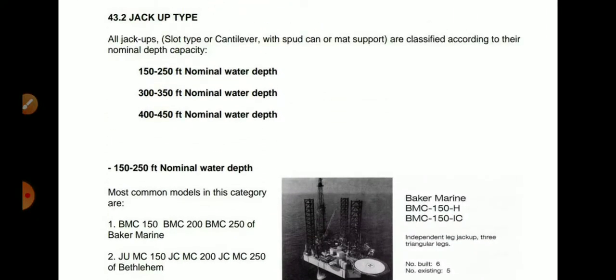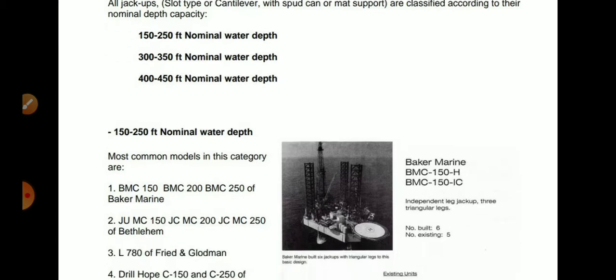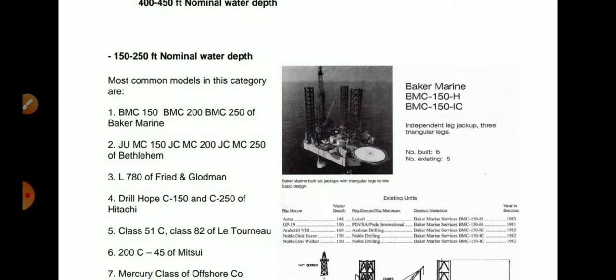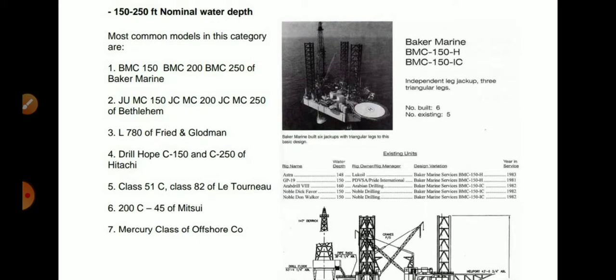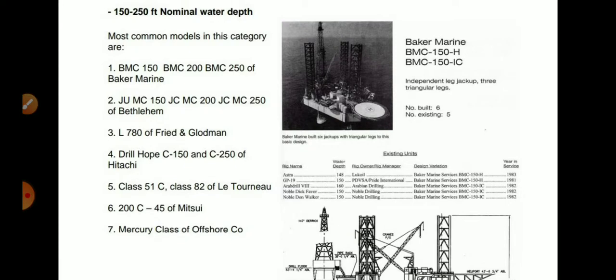Now the different types of jackup rigs: jackups are classified as slot type or cantilever, with spud can or mat supported, and also classified according to nominal water depth capacity. For 150 to 250 feet nominal water depth, there is one category of rig. Common models in this category include BMC 150 and BMC 200. For 300 to 350 feet nominal water depth there is another category. For 400 to 450 feet nominal water depth there is yet another. As the depth increases, the capacity of the rig changes accordingly.